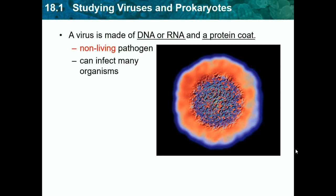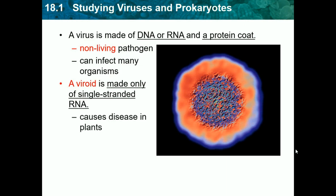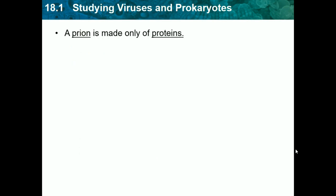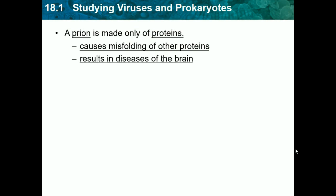A viroid is made only of single-stranded RNA and causes disease in plants. A viroid is basically a virus in plants, and it passes through seed or pollen. A prion is made only of proteins and causes misfolding of other proteins — we don't need to know that in detail. But just if you hear the name you might remember what it is. Prions result in diseases of the brain.